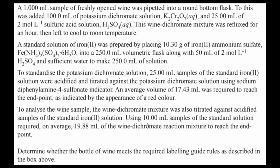If we know how much dichromate was consumed when it oxidized the ethanol, we can use stoichiometric ratios to convert the moles of dichromate consumed into an amount of ethanol that must have been present in the sample. That will help us answer the question about whether the amount of ethanol in the wine is within the 12 to 15% range.